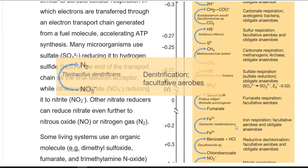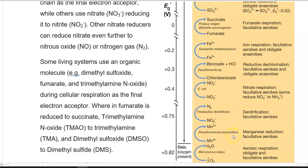Some living organisms use organic molecules as final electron acceptors in the electron transport chain, including dimethyl sulfoxide, fumarate, and trimethylamine oxide. Fumarate can be reduced into succinate, trimethylamine oxide is converted into trimethylamine, and dimethyl sulfoxide can be reduced into dimethyl sulfide.